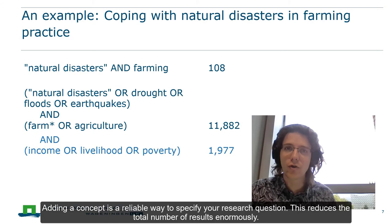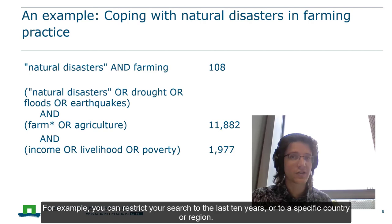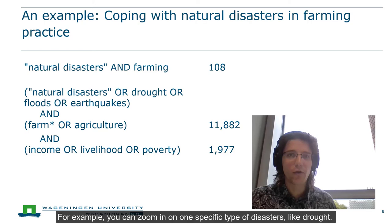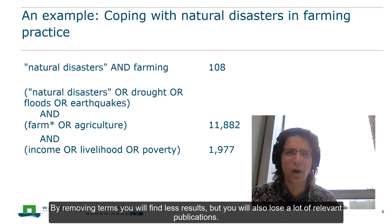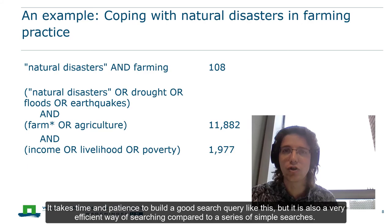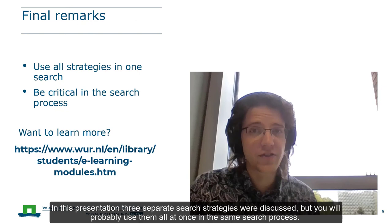Adding a concept is a reliable way to specify your research question and reduces the total number of results enormously. Other ways to specify results include applying filters — for example, restricting your search to the last 10 years or to a specific country or region. Another option is to make one concept more specific, such as zooming in on one specific type of disaster like drought. Note that removing relevant search terms is not a valid method to reduce results — by removing terms you will find fewer results but also lose a lot of relevant publications. Only remove terms if specifically those terms are giving you a lot of irrelevant results, for example because a term is very broad. It takes time and patience to build a good search query, but it is a very efficient way of searching compared to a series of simple searches. Furthermore, it is repeatable and you can reuse pieces of the query for another research question in your project.